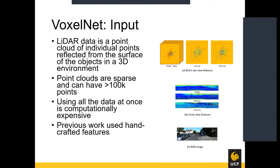The input to VoxelNet is LiDAR data — a point cloud of individual points generated using lasers that reflect from the surface of objects in a 3D environment. The time it takes for the laser to reflect off the object and return to the receiver determines the range of the object. When there are no objects, there is no input, so the point clouds are often very sparse and contain over 100,000 points. If we wanted to use all this data at once, it would be very computationally expensive. In the past, to overcome this issue, handcrafted features were used.